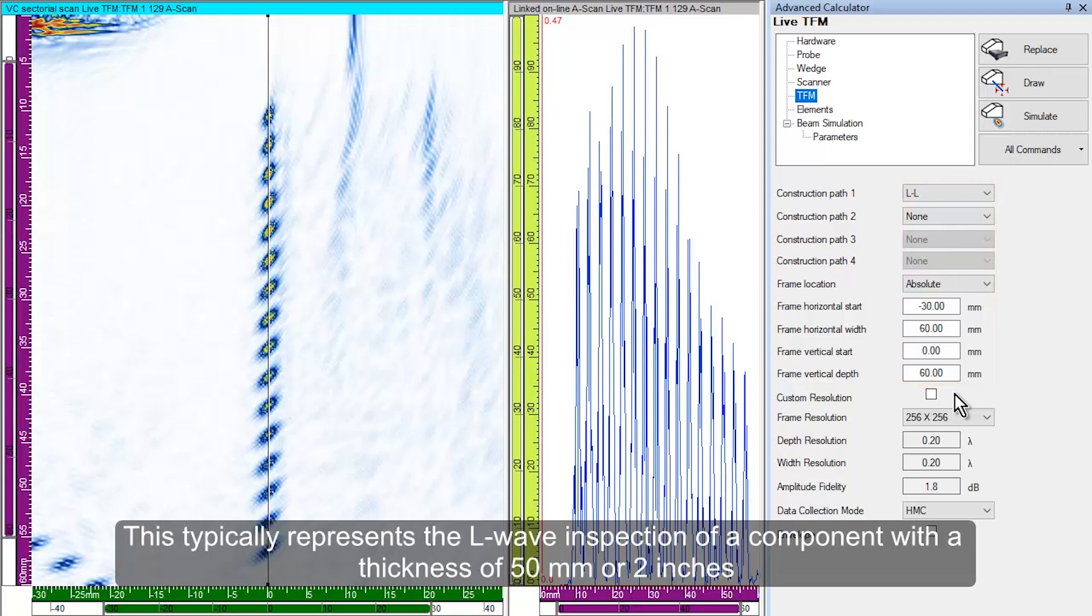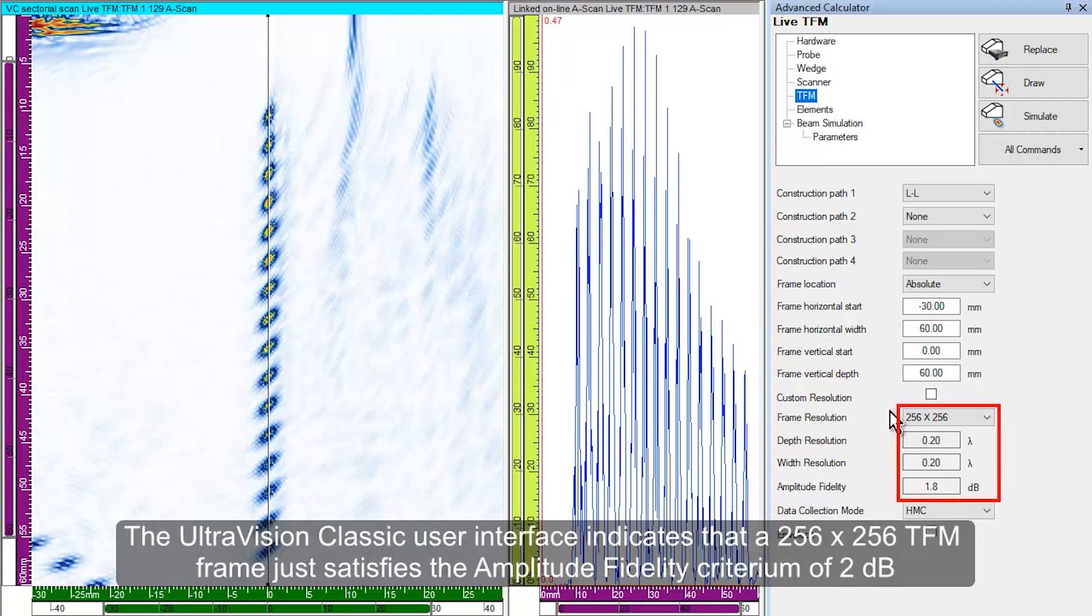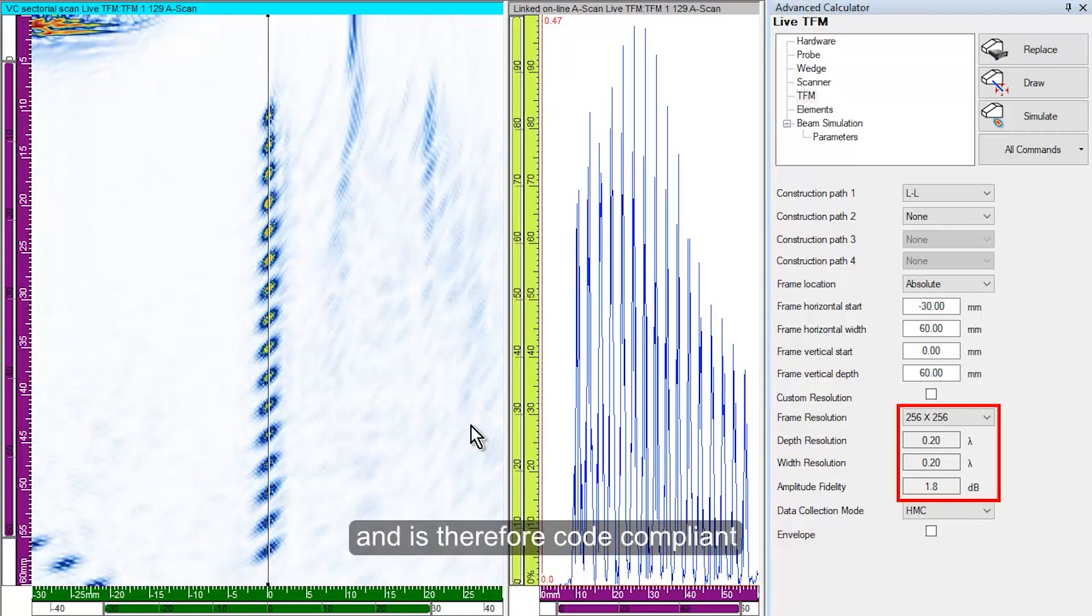This typically represents the L-Wave inspection of a component with a thickness of 50 mm or 2 inches. The UltraVision Classic user interface indicates that a 256 by 256 TFM frame just satisfies the amplitude fidelity criterion of 2 dB and is therefore code compliant.